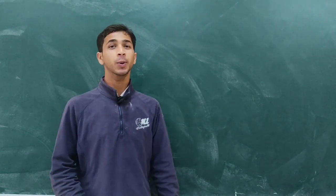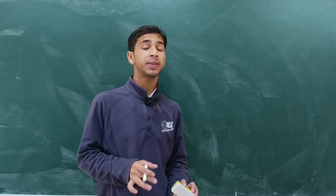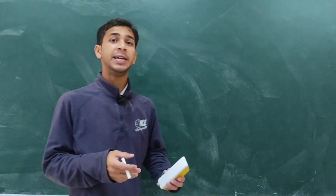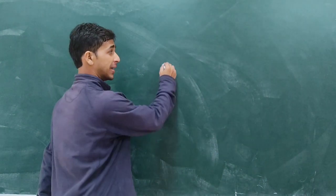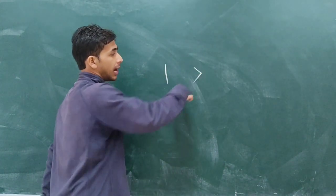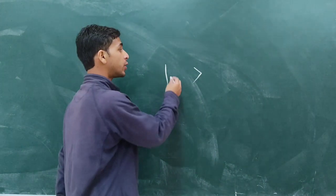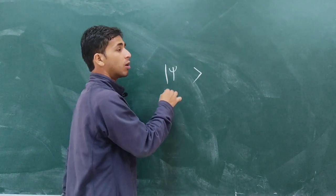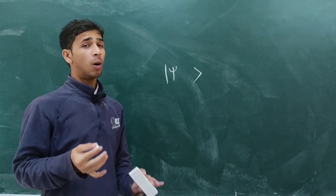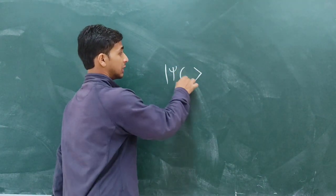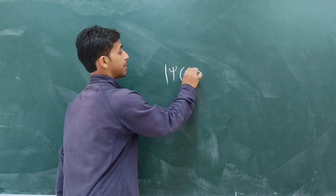We all know a quantum system can be described by a state. We generally denote that state inside a ket, and that state is denoted by the Greek symbol psi. As this state will be dependent on time, this state is a function of time.